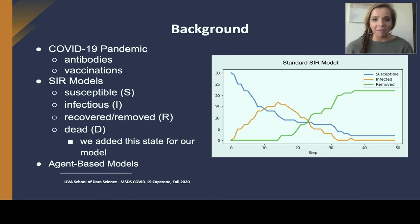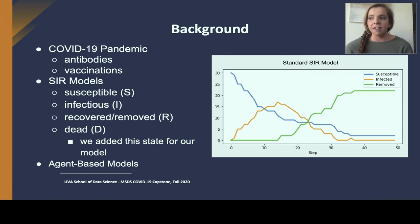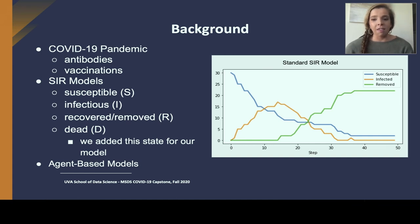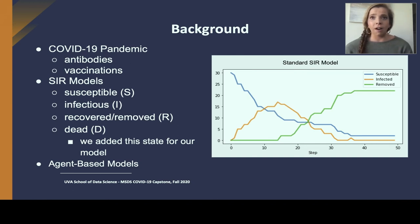COVID-19 doesn't need much background at this point. We've taken into account many nuances of this virus, including antibodies. Current research suggests antibodies don't necessarily last forever, and we've accounted for them lasting around three to four months. We've also heard recently about a Pfizer vaccine that could be up to 90% effective with two doses. We thought it would be interesting to look at different vaccination strategies and spread data across U.S. states to see how they could play out over the coming year.